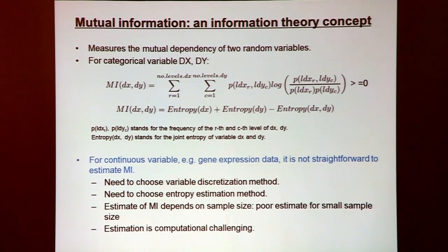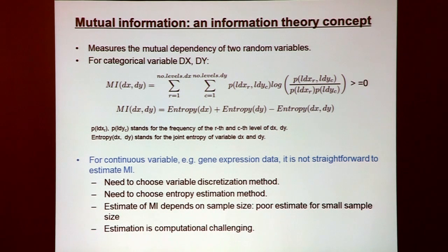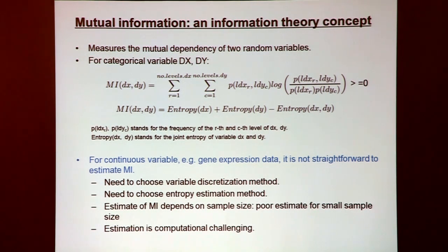Because gene expression is an abundance measure — a continuous variable — one needs estimation methods to arrive at a mutual information measure for continuous variables. One approach is to dichotomize the continuous variable into bins, for example partitioning the range into 10 equal-sized bins, then calculating the frequency of occurrence of each bin to get a probability, and applying the mutual information formula.